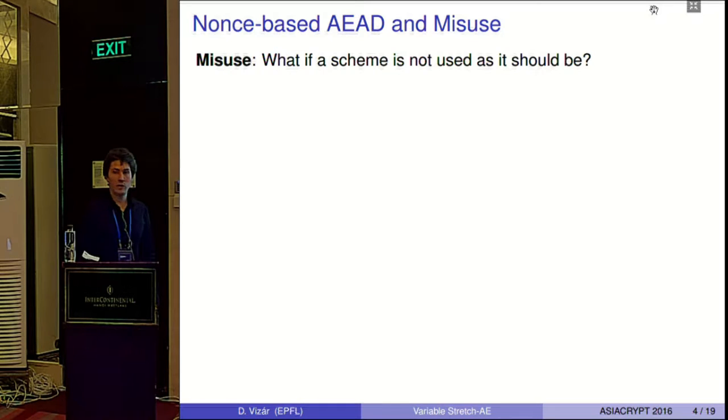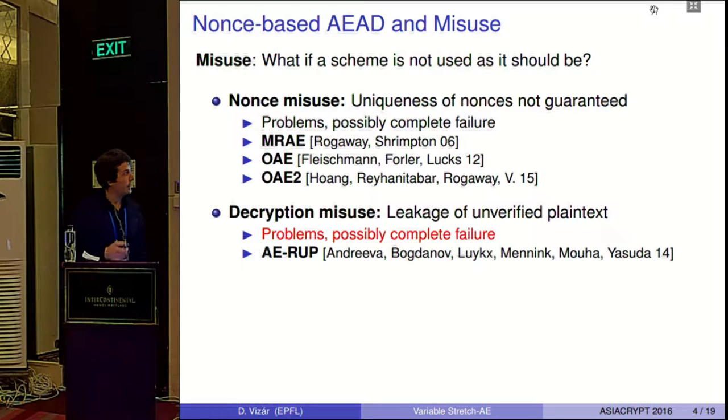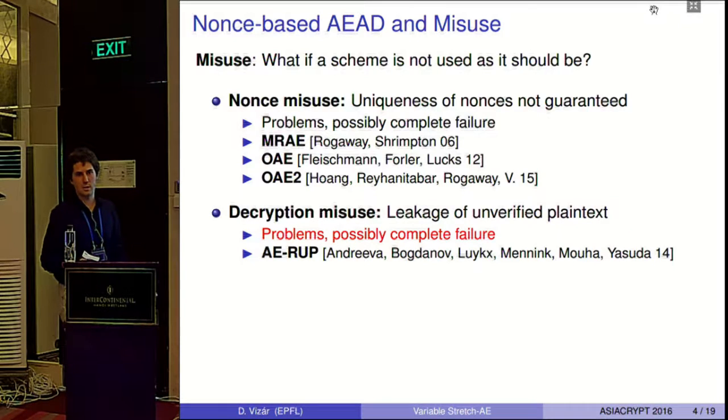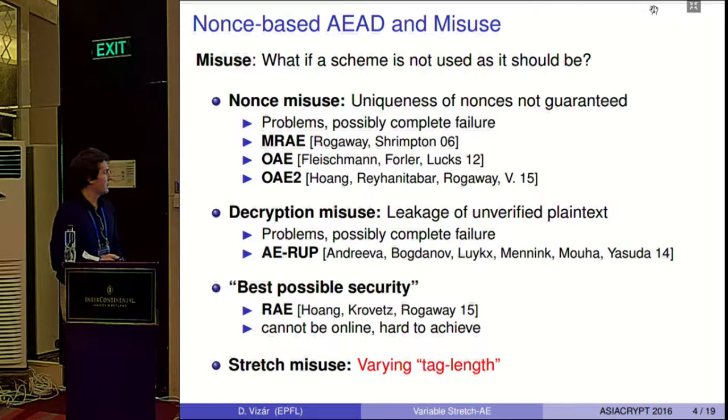A most notorious example of such brittle behavior is nonce misuse. We have studied this problem a lot. Another example is the decryption misuse, where a user might release a putative plaintext before it is verified, and this has disastrous consequences as well. Another approach we have seen in literature is to define a very strong notion, which would treat any misuse that we can imagine. Another type of misuse that we studied in this work, in context of nonce-based authenticated encryption, is the stretch misuse.